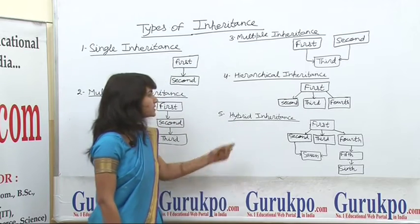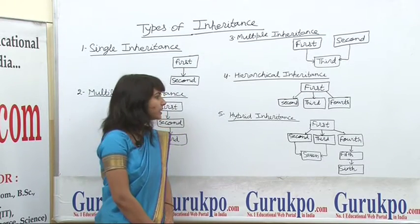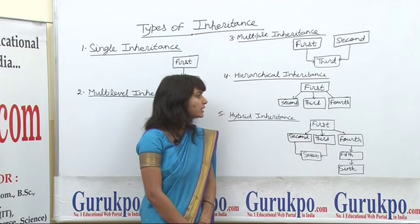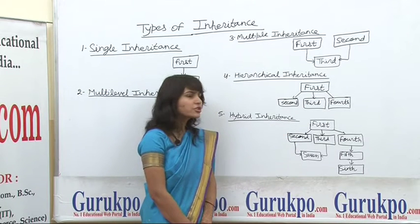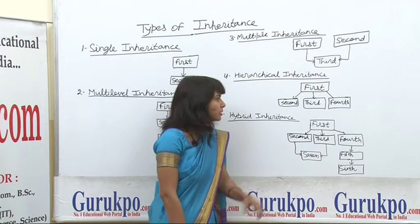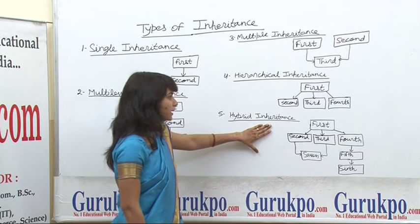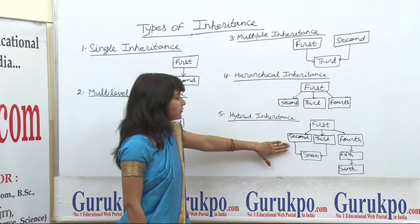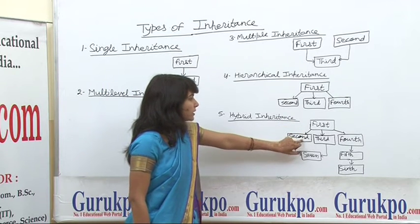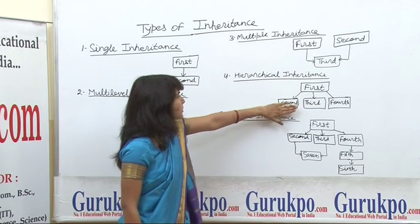Last is hybrid inheritance. Hybrid inheritance can be called a mixture of multiple types of inheritance. Here we can see that in the beginning, this is like hierarchical inheritance, where the first class is the base class and the second, third, and fourth classes use the features of this first class.